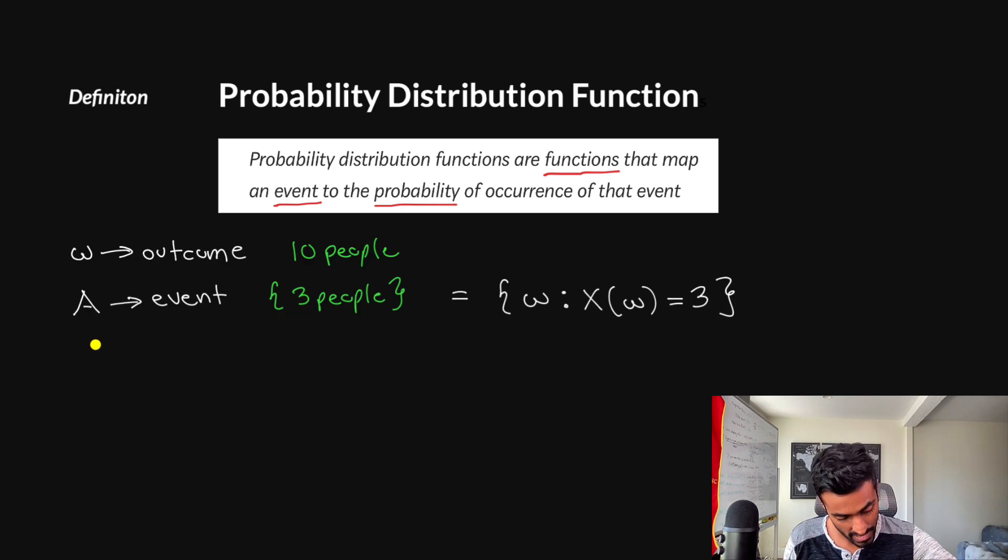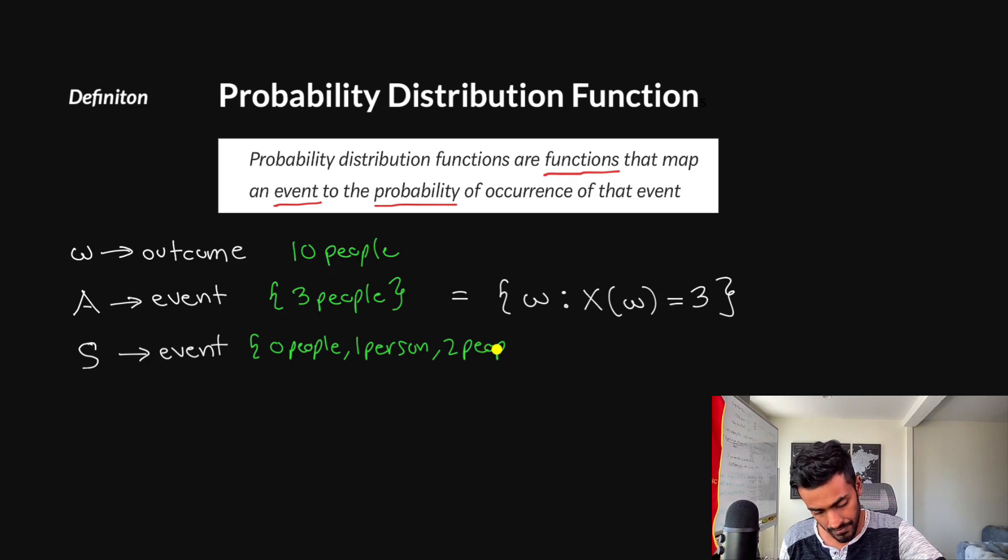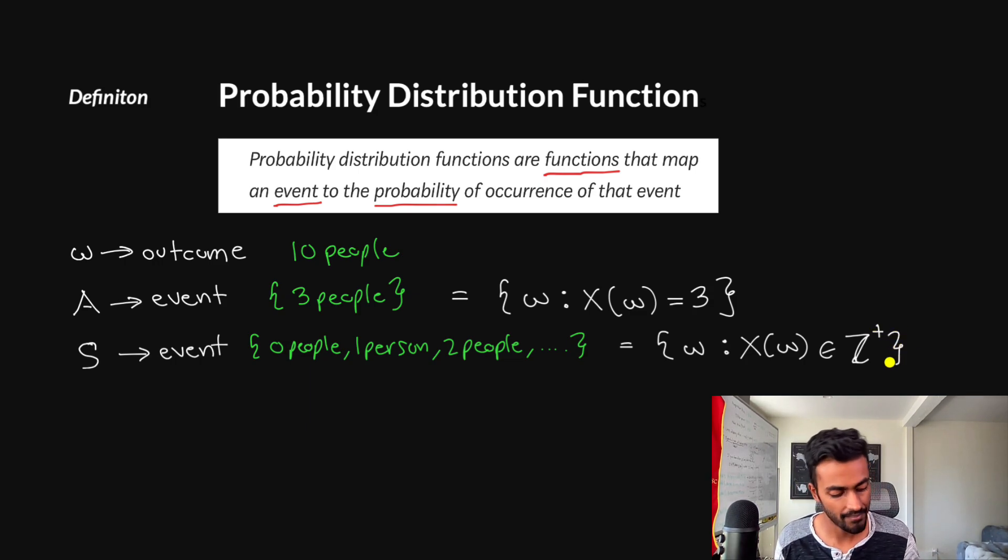This could be a sub, this could be even like a set of total outcomes of all possible number of people that could have passed you, which is one people, two people, three people, four people, and so on. But in this case, I'm specifically interested in just three people, right? And hence, I have this formulation. But we could also say, you know, I'm going to define another event. We'll call it S right over here. This is another event, you can say. And in this event, I am super interested in, let's say, zero people, one person, two people, and so on that may have passed us, right? And mathematically, we could just represent this as the set of all possible outcomes such that the random variable takes on some value in, let's say, in this case, the number of people has to be any positive number or integer value. So let's just do this as positive integer value notation, right? So this set S is a set of all possible events.